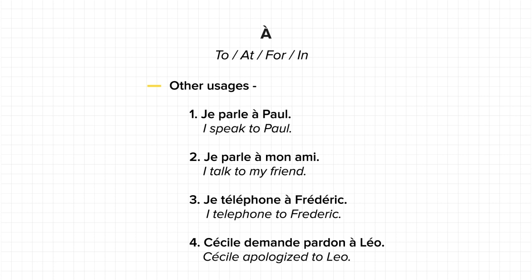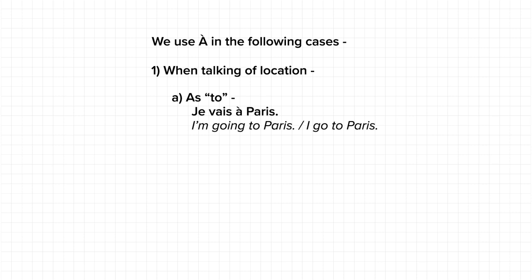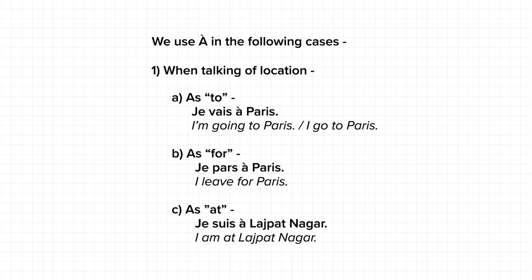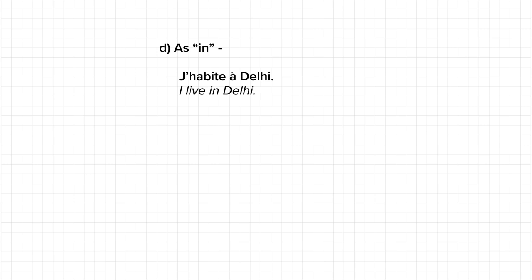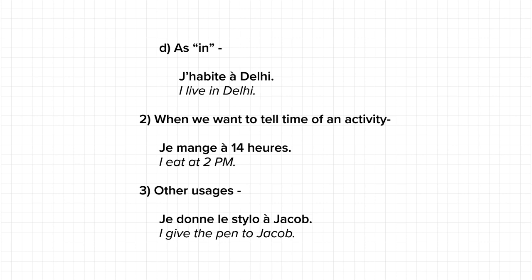There may be many other usages of this preposition, but let's take it step by step. So let's quickly recap. We use 'à' in the following cases: when talking about a location as 'to', we would say 'Je vais à Paris'; as 'for', we would say 'Je pars à Paris'; as 'at', we would say 'Je suis à Lajpatnagar'; as 'in', we could say 'J'habite à Delhi'. We also use 'à' when we want to tell the time of an activity: 'Je mange à 14h'. And 'à' has other usages like 'Je donne le stylo à Jacob'. There can be many more sentences like these.